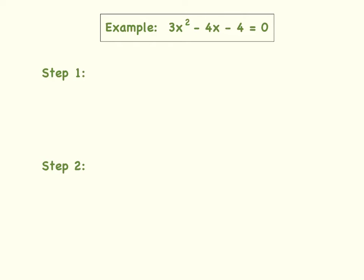We want to find the factors of a times c that will add up to b. Now in order to do this, we have to identify our a, b, and c value. So my a value is 3, my b value is negative 4, and my c value is also negative 4. So again, in step number 1, now that we've identified our a, b, and c values, we can find the factors of a times c that will add up to b.